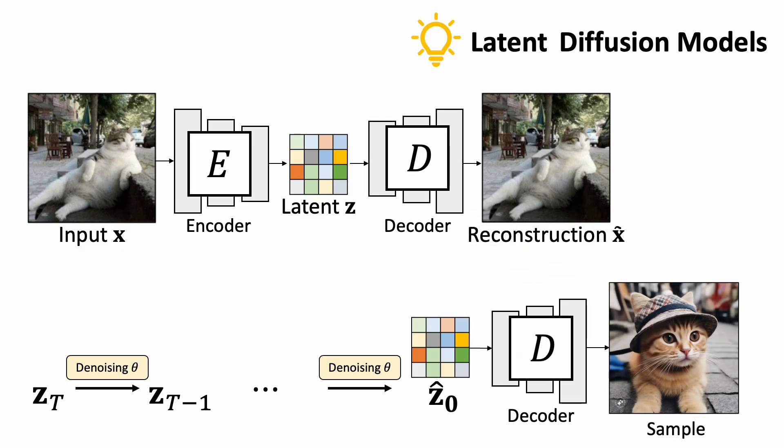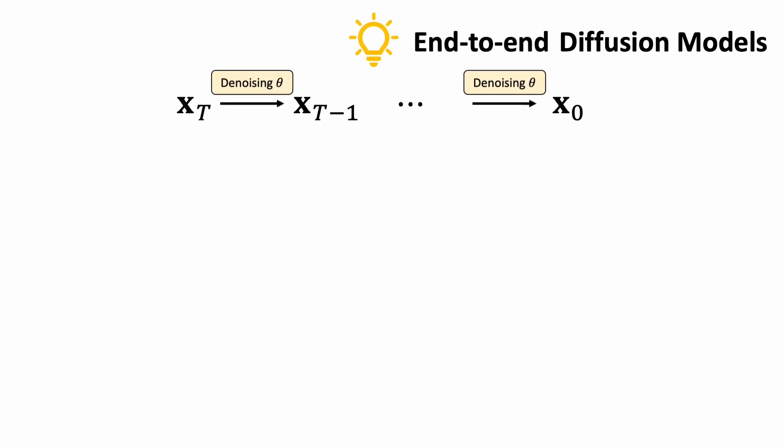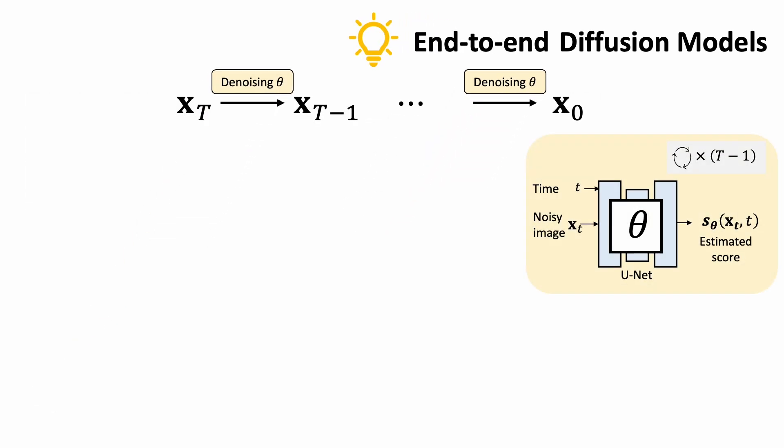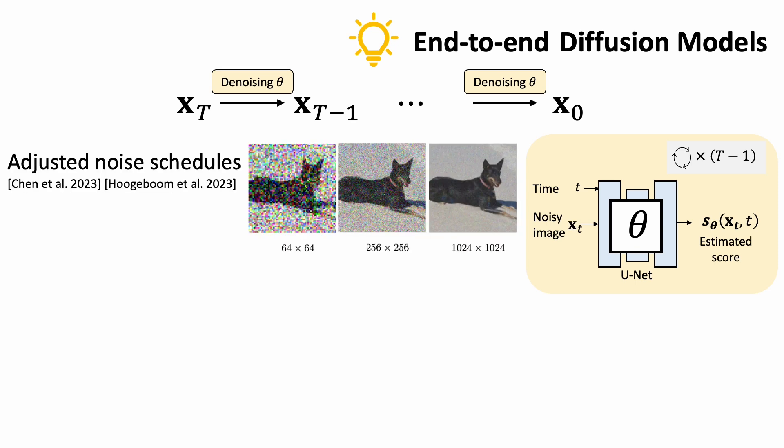In both cascade and latent diffusion models, we need to train several models separately. End-to-end methods aim to generate high-resolution images with a single diffusion model. Several promising ideas have been proposed, such as adjusting the noise schedules for high-resolution image generation, multi-scale loss, and progressive training.